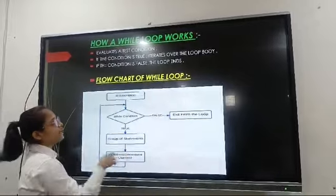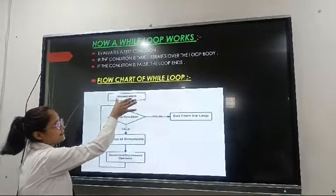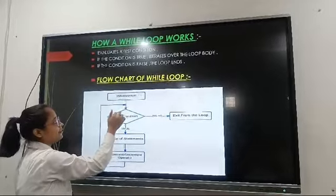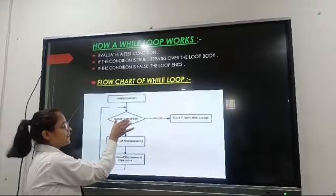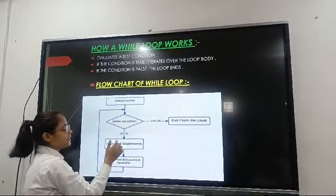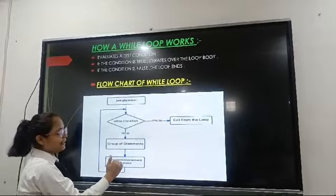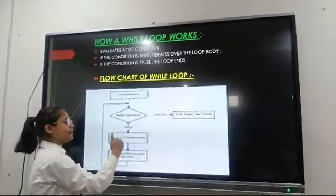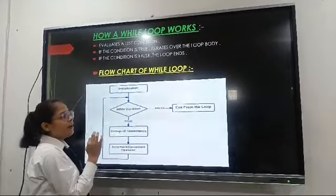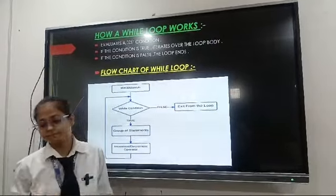Here is the flowchart of while loop. First we can see that initialization has taken place. After that, this diamond shape is used to check the condition. If the condition is true, then the block of statements executes and then increment takes place. Then again we go to check the condition. This process will continue until the condition becomes false, then we will exit from the loop.